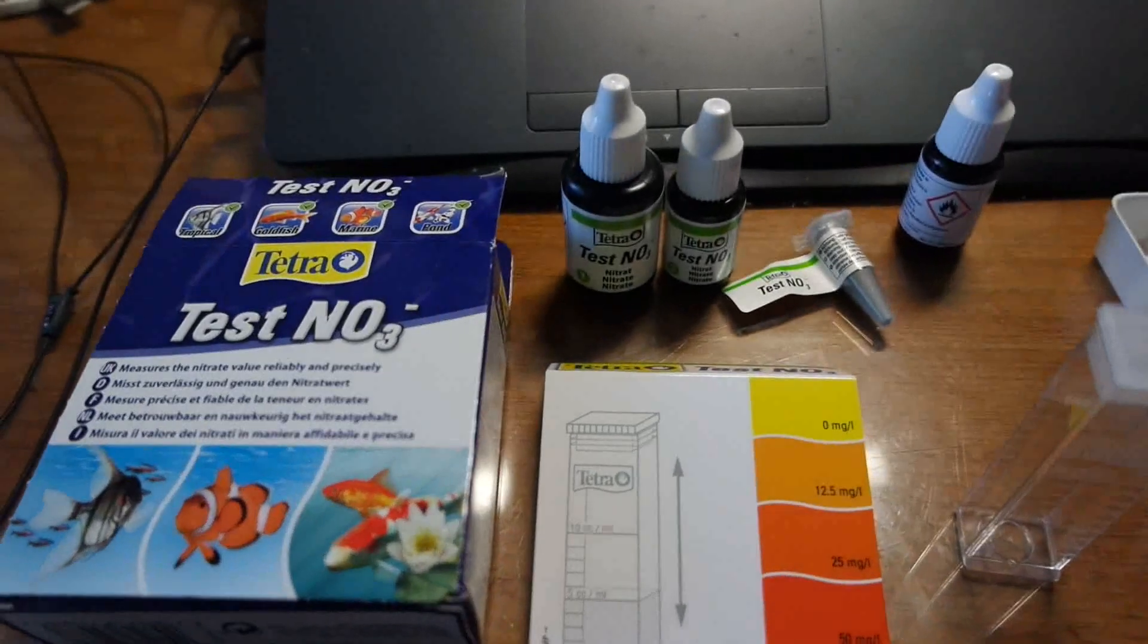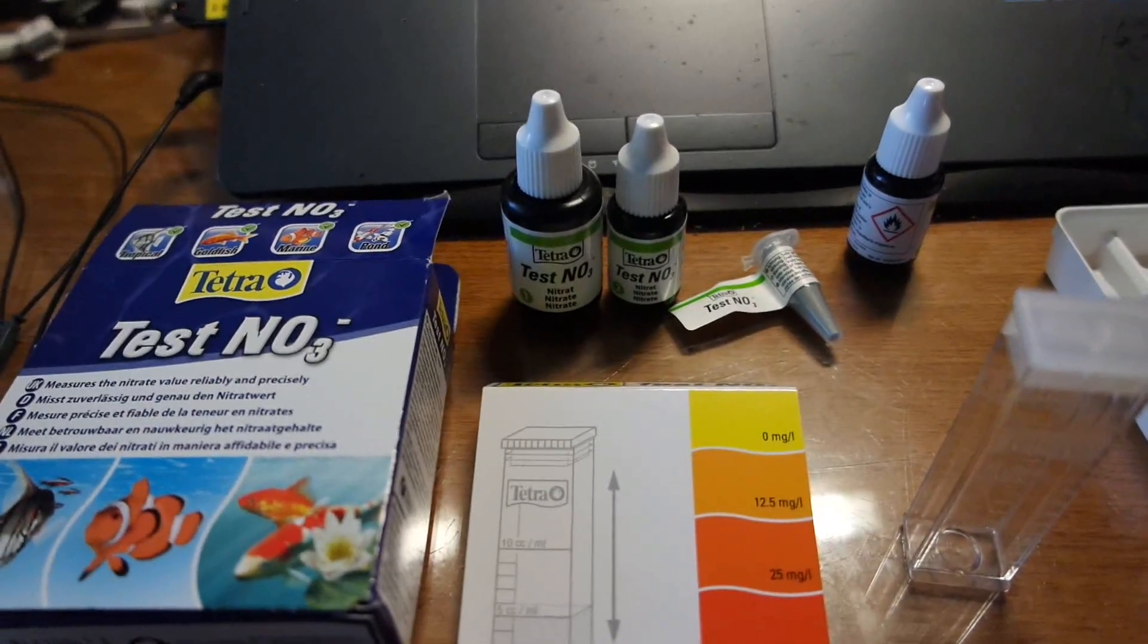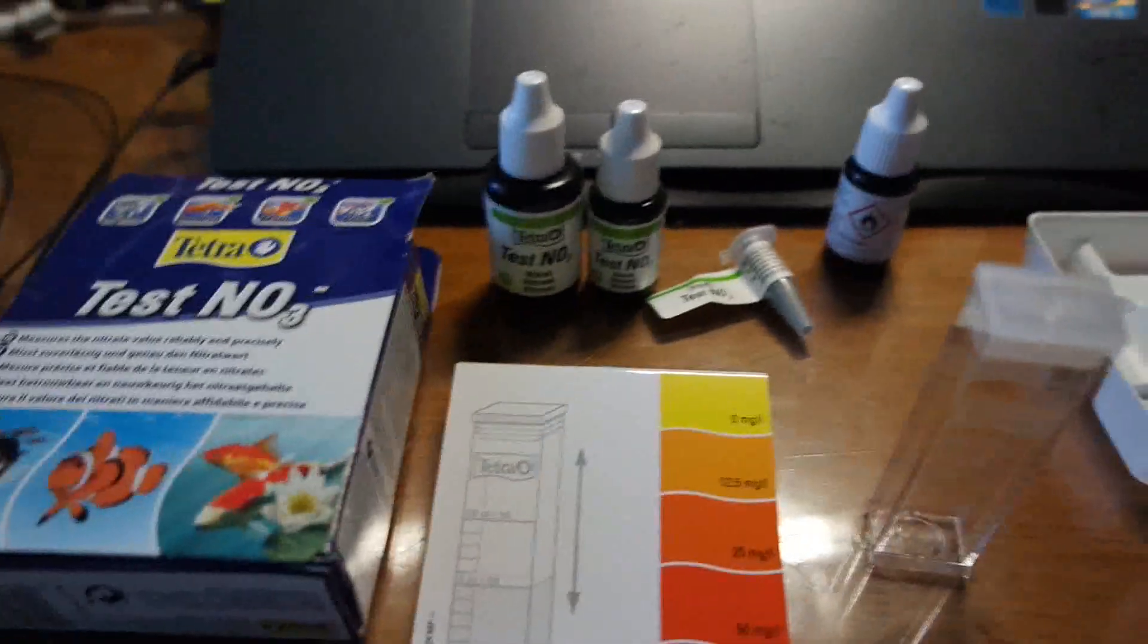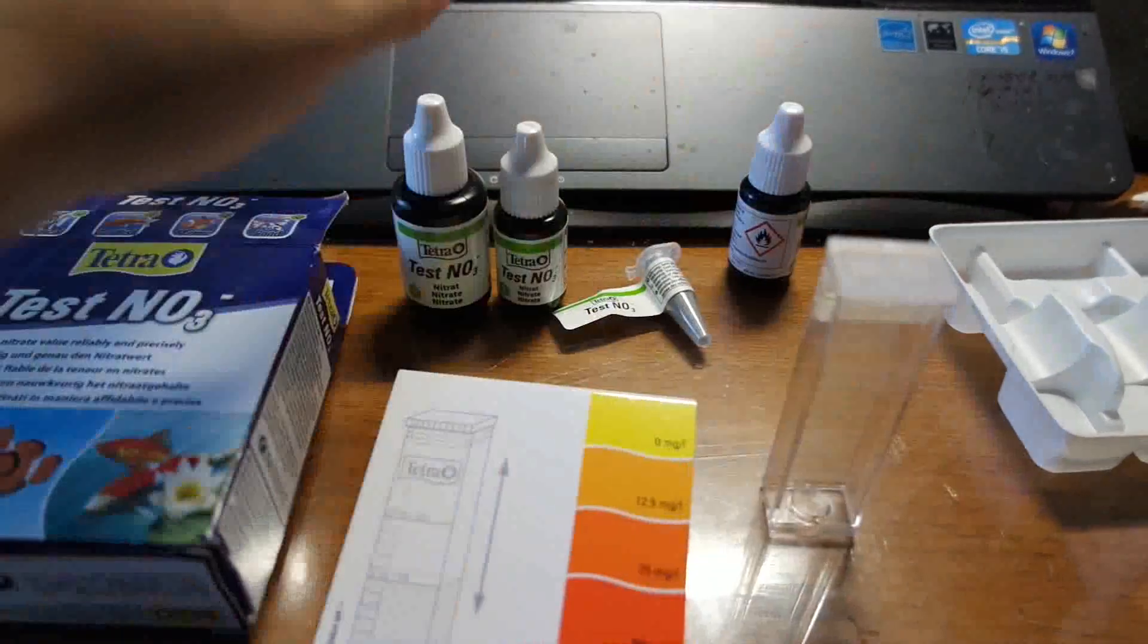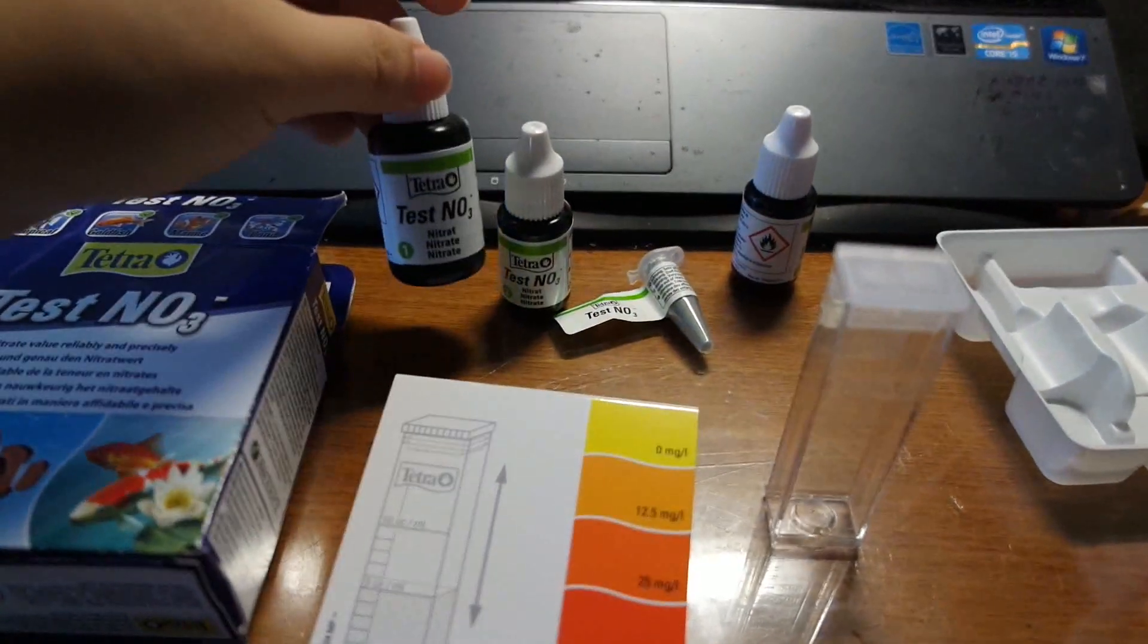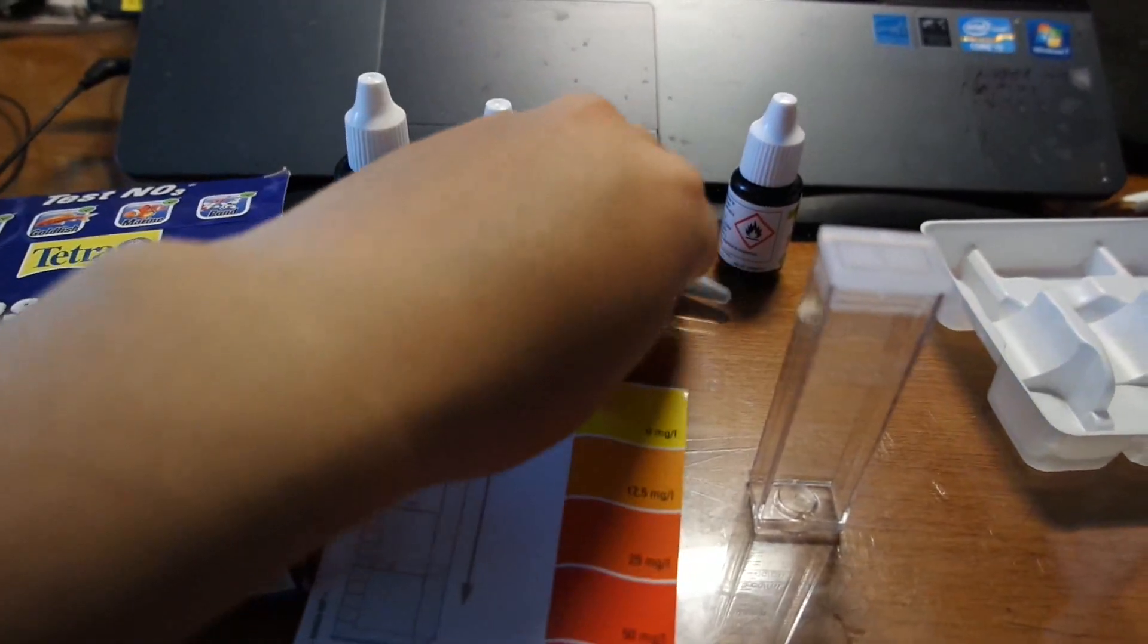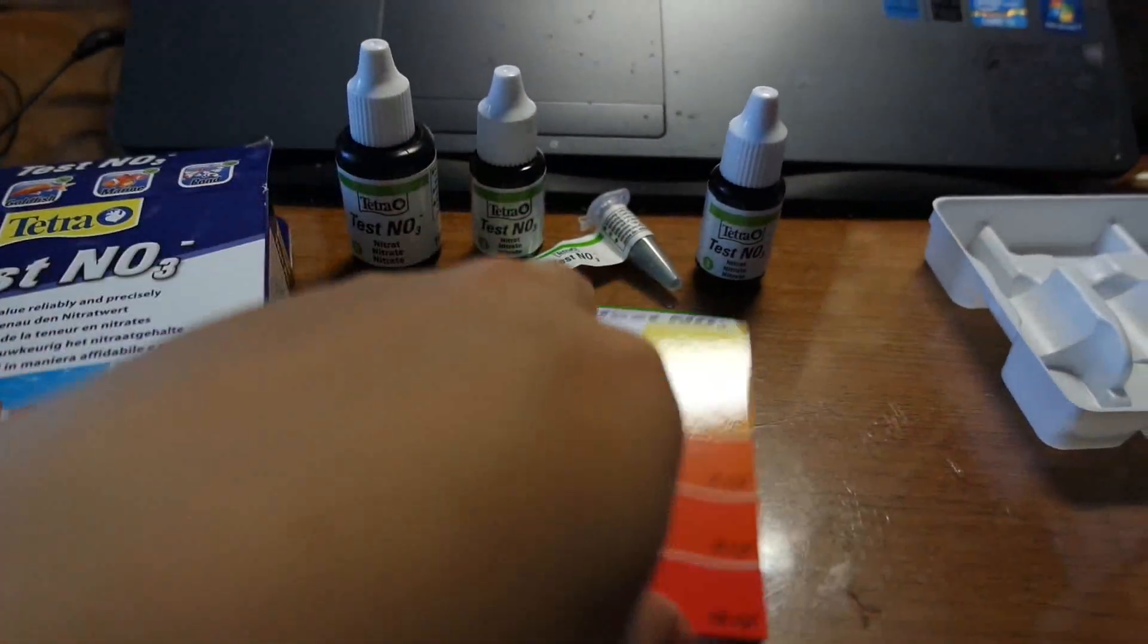For the test I'll be using the Tetra test kits. These utilize a couple of different solutions and give you a color rating as to the nitrate levels. You take some tank water and get it into this container. You add 14 drops of solution 1, then 7 drops of solution 2, then a tiny bit of powder, and finally wrap it up with 7 drops of solution 3. You shake it and then you get a color. Dark red means bad and yellow means good.